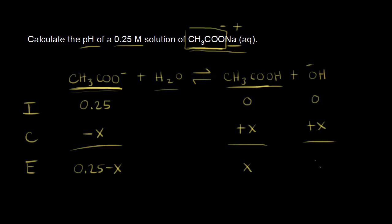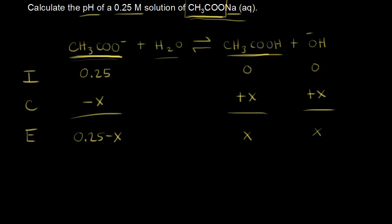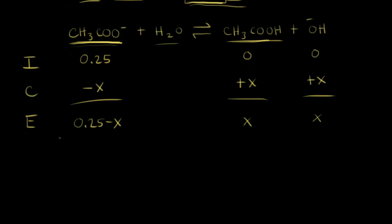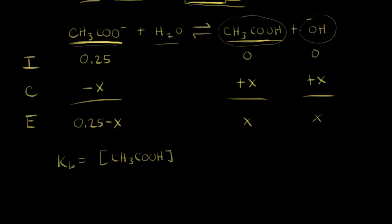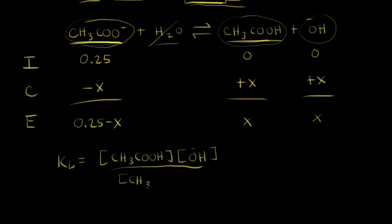The concentration of hydroxide would also be X. Next, we write our equilibrium expression. Since acetate is functioning as a base, we write Kb. Kb is equal to the concentration of our products over concentration of our reactants — the concentration of CH3COOH times the concentration of OH-, all over the concentration of acetate. We ignore water, so we only have the concentration of acetate in the denominator.